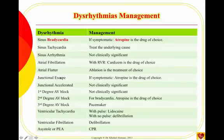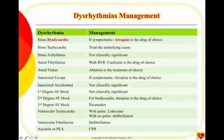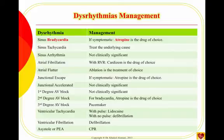For junctional escape rhythms with a low heart rate, and for AV blocks with symptomatic low heart rate, we can give atropine. The best approach for all dysrhythmias is first to look for and treat the underlying cause — medications, hypothyroidism, hyperthyroidism, or electrolyte imbalances can all lead to dysrhythmias.